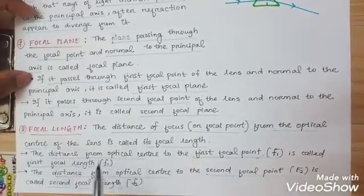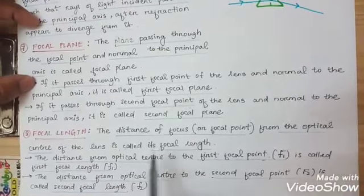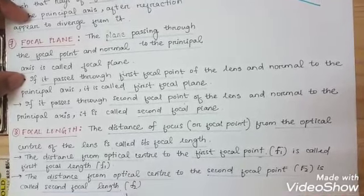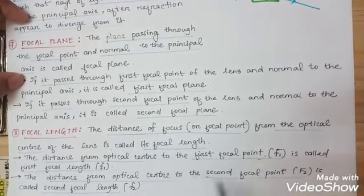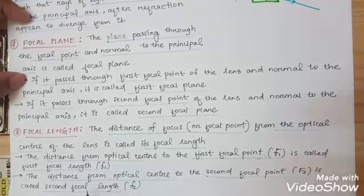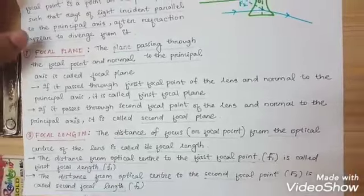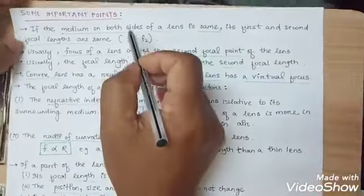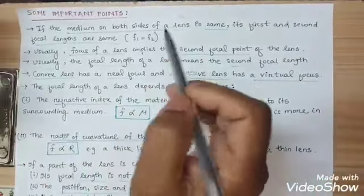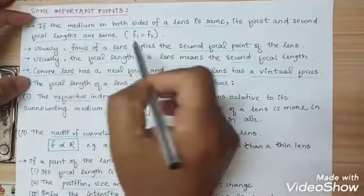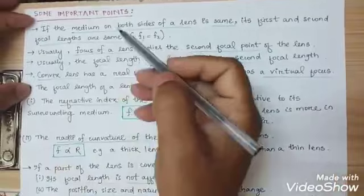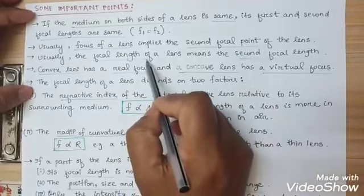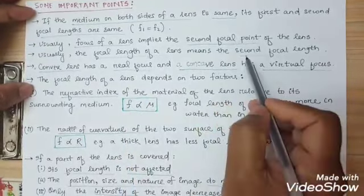Now come to focal length — very important. The distance of the focus from the optical center of the lens is called focal length. There are also two types of focal length: first focal length, which is the distance from the optical center to the first focal point, and second focal length, which is the distance from the optical center to the second focal point. Usually when we say focal length, we mean the second focal length.